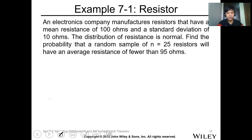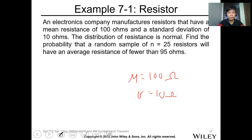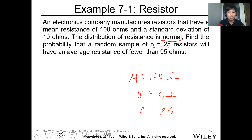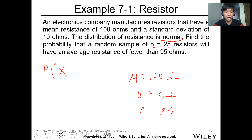An electronic company manufactures resistors that have a mean resistance — so our mean value is 100 and the standard deviation is 10 ohms. The distribution of resistance is normal. We have a sample number n which is 25. So the question is: find the probability that the random sample of n equals 25 resistors will have an average resistance of fewer than 90 — so we're finding x-bar less than 95 ohms.